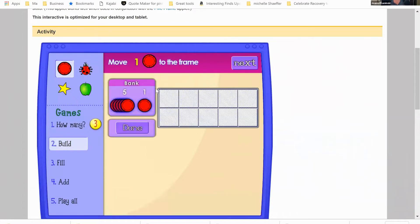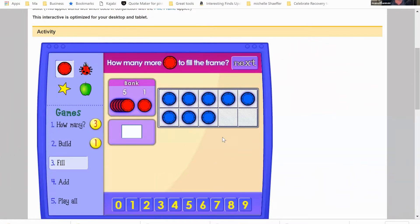Now you can also do a build game. It's going to tell you to move to the frame and then you click done. This is really working on that one-to-one coordination. Here's one called fill. Now I can actually move these over or I can just answer. It asks how many more circles to fill the frame. I can say I know that I need three, and I could actually physically put three over here: one, two, three. We can even play some adding games or all the games. So this is a great tool for really building that concept of base 10 and also being able to work with numbers up to 10.